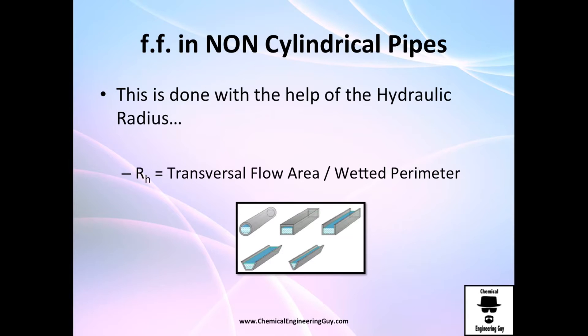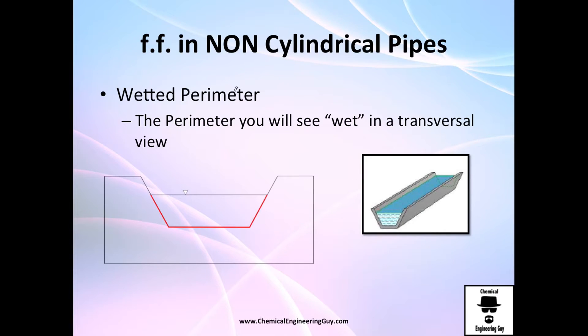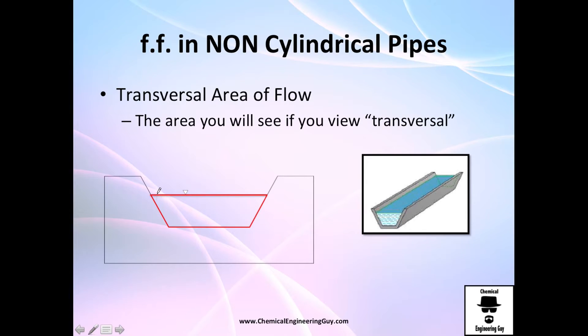I think there's no problem with the transversal area idea, but maybe the wetted perimeter might sound kind of different to understand, or difficult. So, what I mean wetted is what is touching, the fluid is touching in the actual duct or pipe. For example, this would be the wetted perimeter.